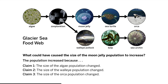We've also learned that the size of a population can be affected by populations other than its consumer or resource populations. In the previous lesson, we discussed how the algae population, the walleye pollock population, and the orca population could have all caused the size of the moon jelly population to increase.